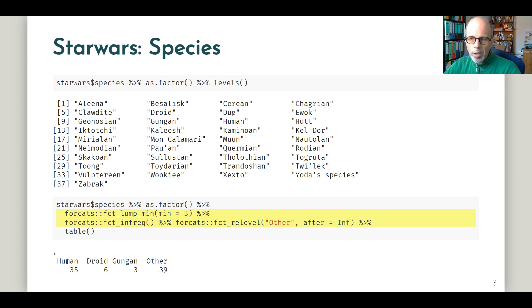We only have three species that appear at least three times: 35 humans, 6 droids, 3 Gungans, and then 39 others. For the sake of simplicity, we'll now focus on the droids.